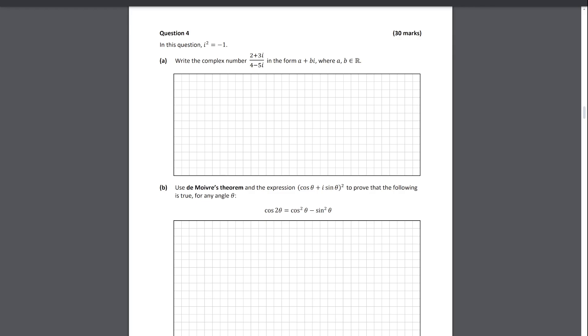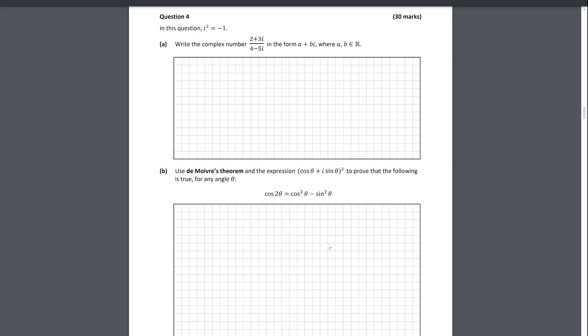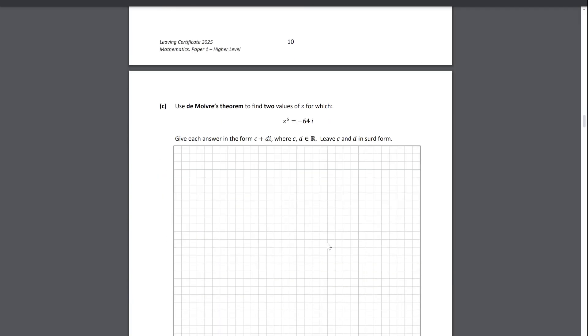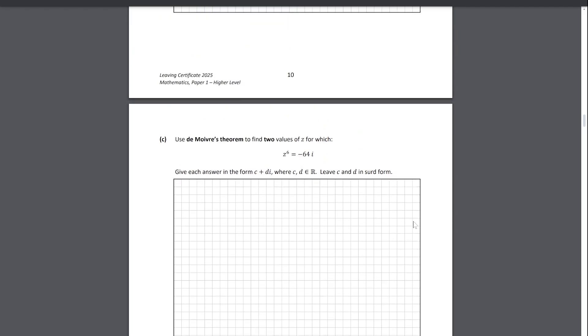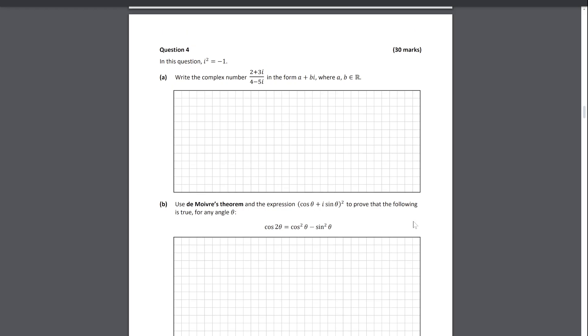Question four: we were expecting a De Moivre's theorem to come up, and it came up in finding an angle in terms of sines and cosines. You effectively just expand the set as normal and then equate the real side because we're talking about the cosine function. Then another one there just trying to find the roots of some equation. I would think that's a very straightforward complex numbers question - it wasn't as involved as the previous two years.